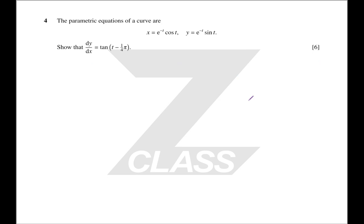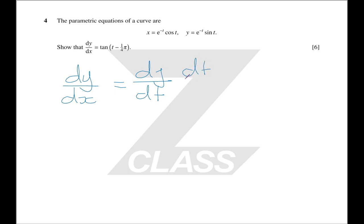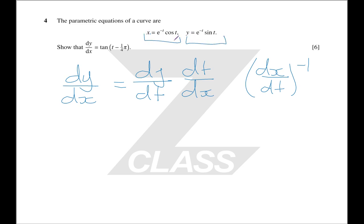Question 4: the parametric equations of a curve. Show that... The key to this is the chain rule: dy/dx equals dy/dt times dt/dx. And dt/dx is just 1 over dx/dt. You can do dx/dt and dy/dt with the product rule as usual, put them in, and you'll probably have to use a trig identity to get to your tan at the end — likely a sine on top and bottom.